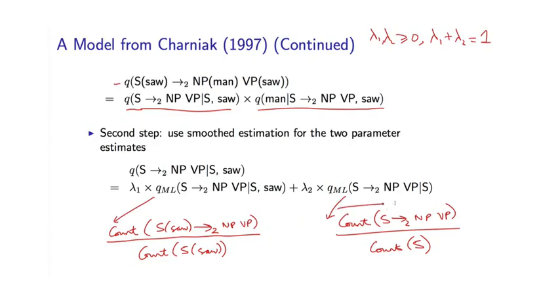By the usual arguments, this estimate will tend to be more robust in that the counts will be larger, we'll have fewer problems with counts being zero, whereas this estimate will be more detailed in that it takes into account lexical information, which is very useful. By interpolating these two estimates, we get a balance, the strengths of both estimates: robustness and also some sensitivity to lexical information.